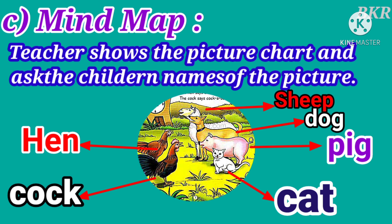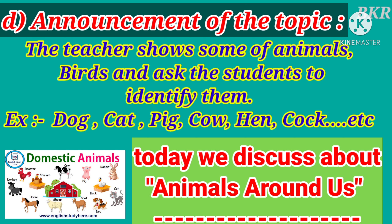Mind Map: The teacher shows a picture chart and asks the children the names of the animals in the picture. Observe the picture — in this picture some animals are there: sheep, dog, pig, cat, cock, hen. The teacher asks students to identify them — for example: dog, cat, pig, cow, hen, cock, etc.